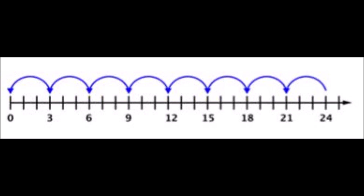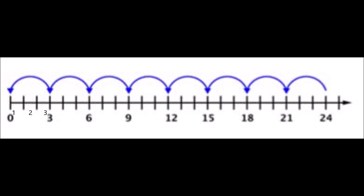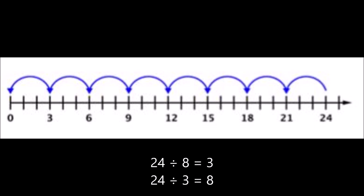Next, we have another number line, but this time it's going backwards — so this tells us the number line is showing division. I count the hops: one, two, three, four, five, six, seven, eight. So one of my numbers is eight. There are three in each group, so I have eight groups of three objects, which gets me to 24. Since this is division, I write: 24 divided by eight equals three. We can also write the flip: 24 divided by three equals eight. Don't write multiplication for this picture because it only shows division — we're going backwards.